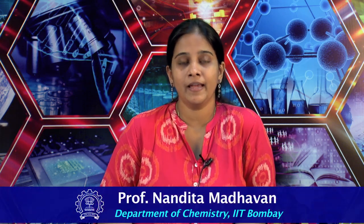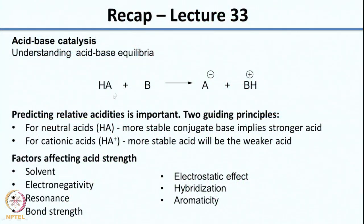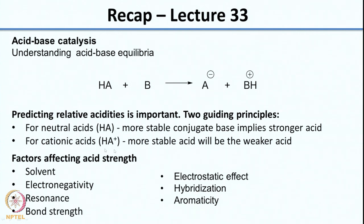Welcome back. In the last class we were looking at acid-base equilibria. If you consider this as a generic reaction for acid-base equilibria, you have two acids here: HA and BH+, which is the conjugate acid of this base. Understanding the relative acidities of both of these is very important. To predict the relative acidities, there are two guiding principles: for neutral acids, a more stable conjugate base implies a stronger acid; for cationic acids, a more stable acid would be the weaker acid.